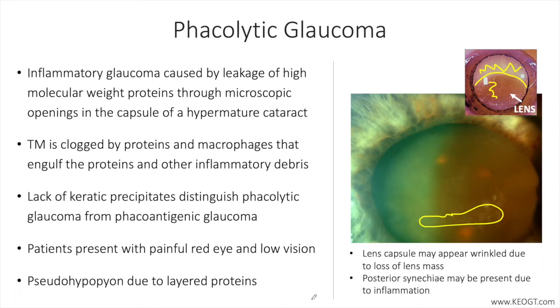The inflammation associated with leakage of proteins through the lens capsule may lead to posterior synechia, which will require attention at the time of cataract surgery through lysing of the synechia with various techniques, and can make extraction of the lens more difficult.